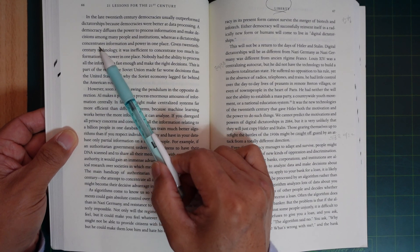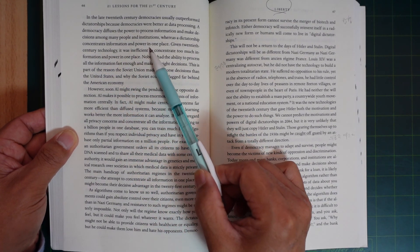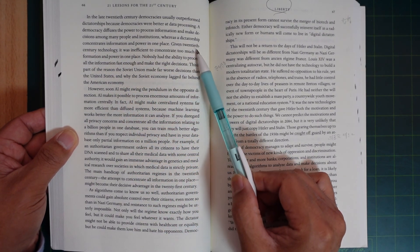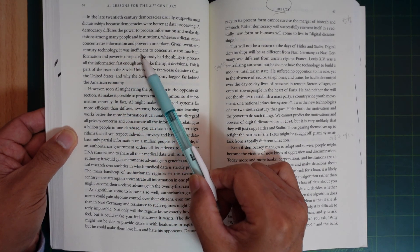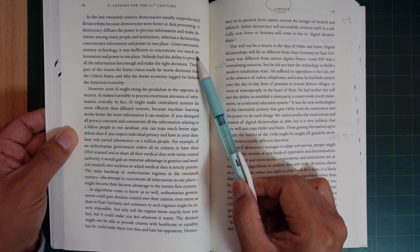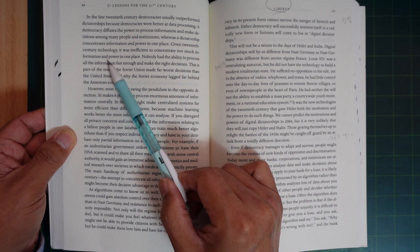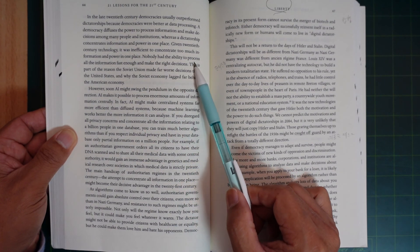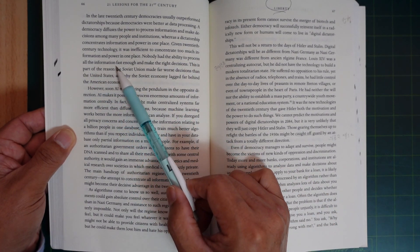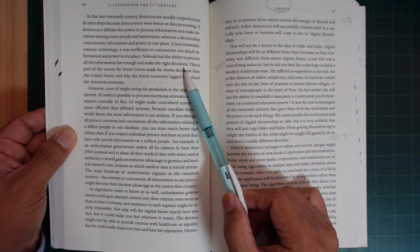Whereas a dictatorship concentrated information and power in one place. Given 20th century technology, it was inefficient to concentrate too much information and power in one place.